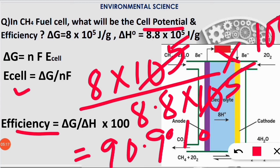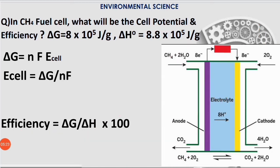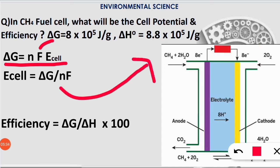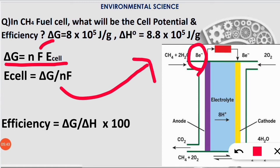We got E_cell = 1.03 volts and efficiency = 90.9%, so it's very efficient. This is how we solve this type of question. You have to remember this formula, Faraday's constant, and that n is the number of electrons transferred: 8 for methane fuel cell and 4 for hydrogen fuel cell.